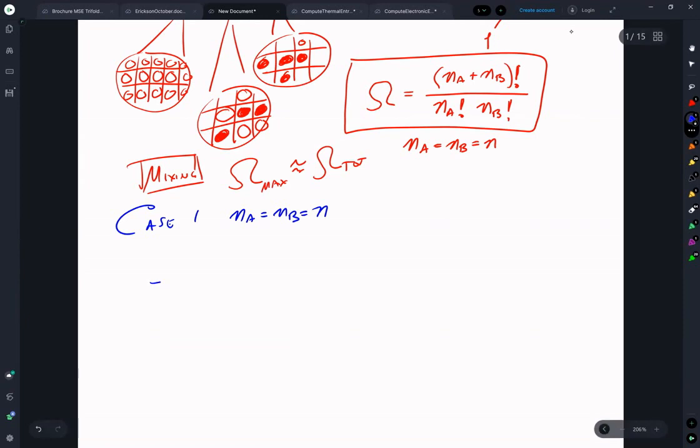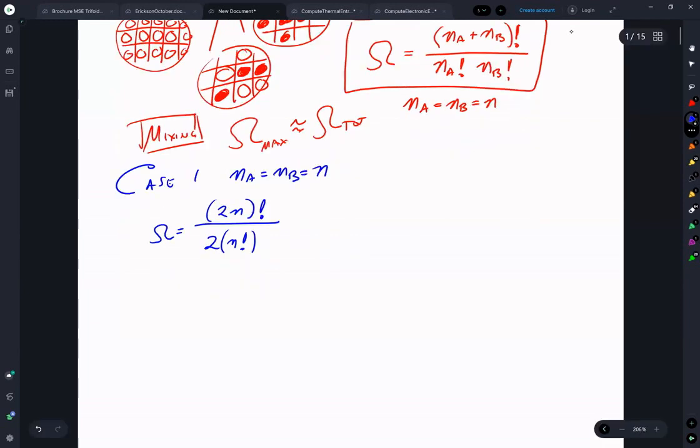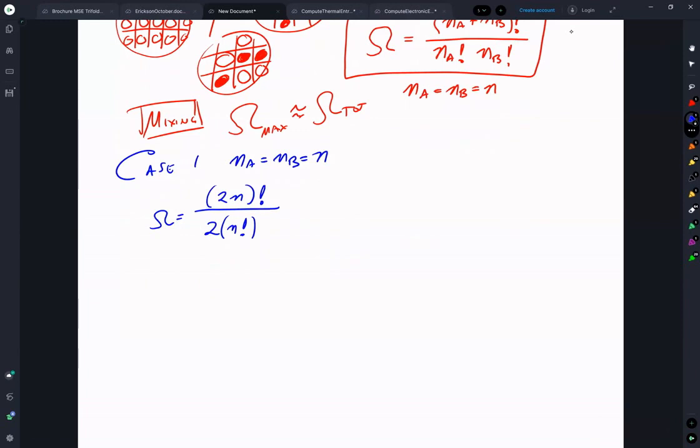We're left with omega is equal to 2N factorial over 2N factorial. And I took and I messed around this a little bit with factorial algebra and nothing really came out of it. It didn't really reduce in a pretty fashion. So that brought me to S2 is equal to Boltzmann constant natural log 2N factorial over 2N factorial as our solution.